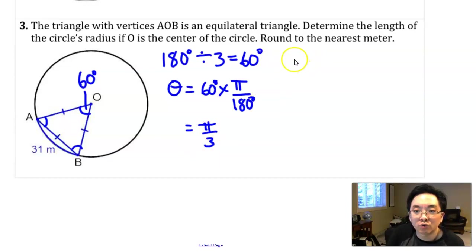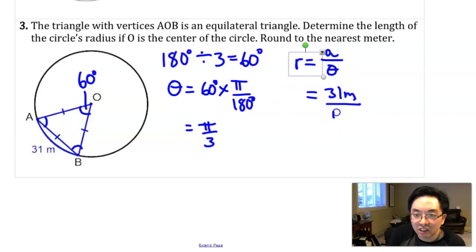If I need to find the radius, wouldn't that be a over theta? If you make r the subject of the formula, then r equals a over theta. We've got a equals 31 meters. Theta is dimensionless and it's pi over 3. This angle has no units, so our final units will be meters.